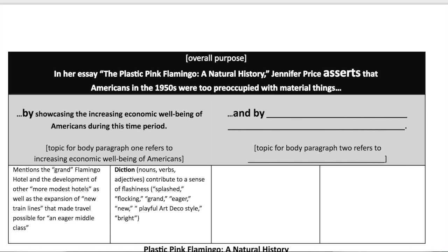Now that you've learned how to write an introductory paragraph for a rhetorical analysis essay, also known as a PFS, we need to look at how to write body paragraphs. We'll write body paragraphs over the plastic pink flamingo piece, and I'm going to walk you through a little formula to help you do that. Jennifer Price asserts that Americans in the 1950s were too preoccupied with material things by showcasing the increasing economic well-being of Americans during this time period, and that's where you'll fill in the blank.